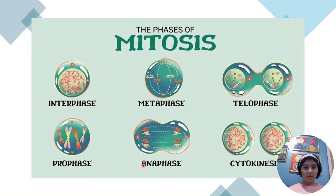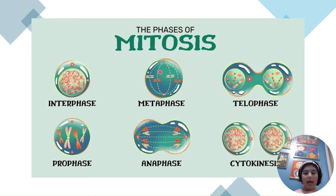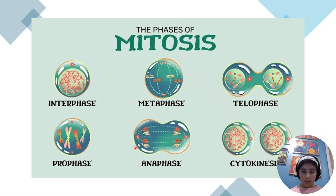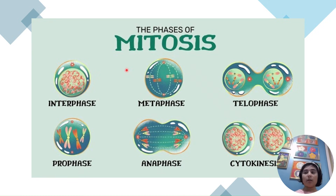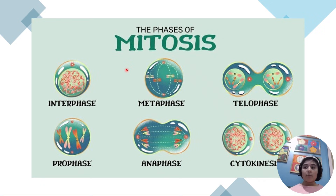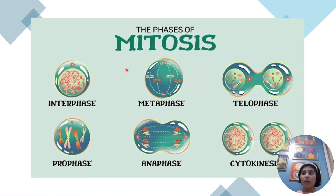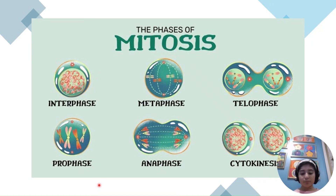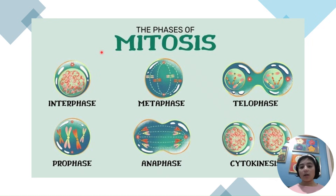In anaphase — 'A for away' — the chromatids of each chromosome separate and are pulled to opposite sides of the cell by spindles. A cell has 46 chromosomes, and after mitosis there are still 46, because DNA replication only copied a chromatid on the other side of the centromere. Chromosomes are counted by the number of centromeres, so two chromatids still make one chromosome — 46 in each resulting cell.